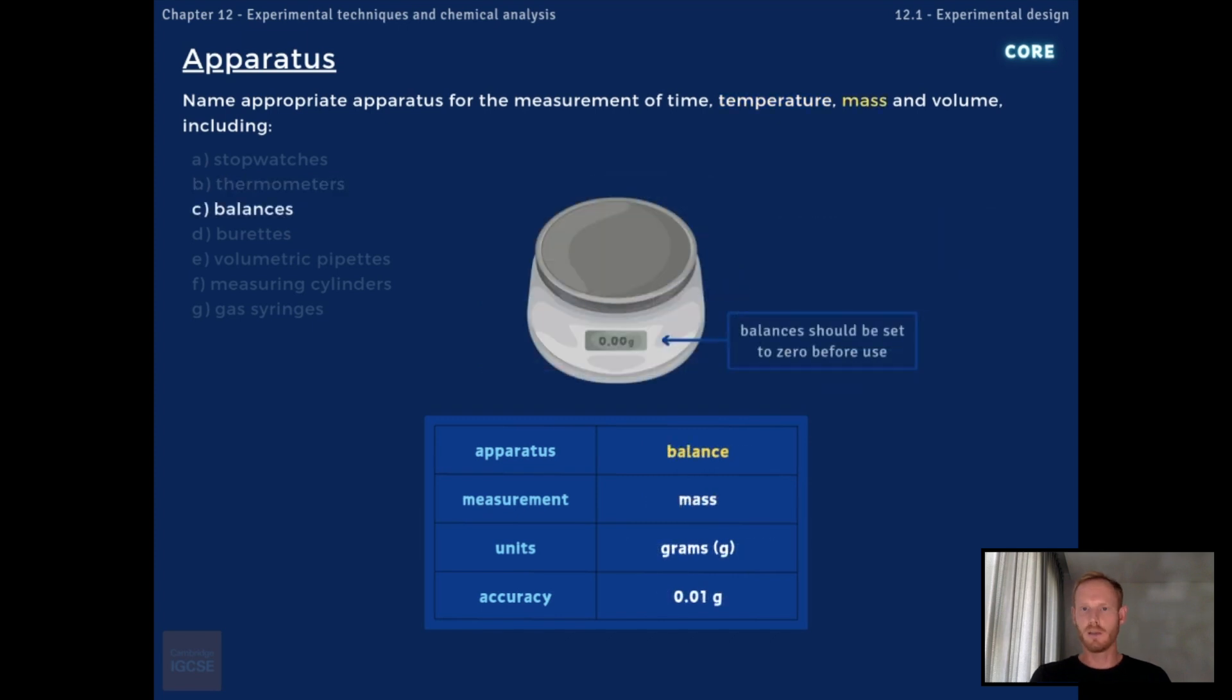Mass is measured using a balance, which generally gives readings to two decimal places. The standard unit of mass is the kilogram, although in chemistry, grams are more often used.